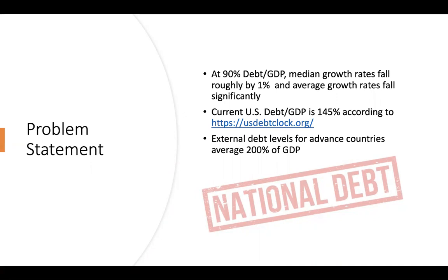It depends on how you measure it — US debt is around 100% of GDP by some measures. But overall, it's big. This year, pretty much every single country in the world will see their debt-to-GDP ratio increase for two reasons: GDP is slowing down, and there is a large government deficit. We'll talk about that in the next slide.